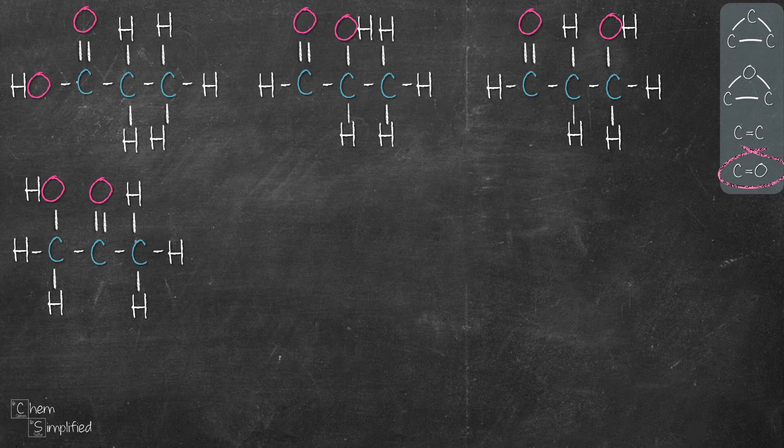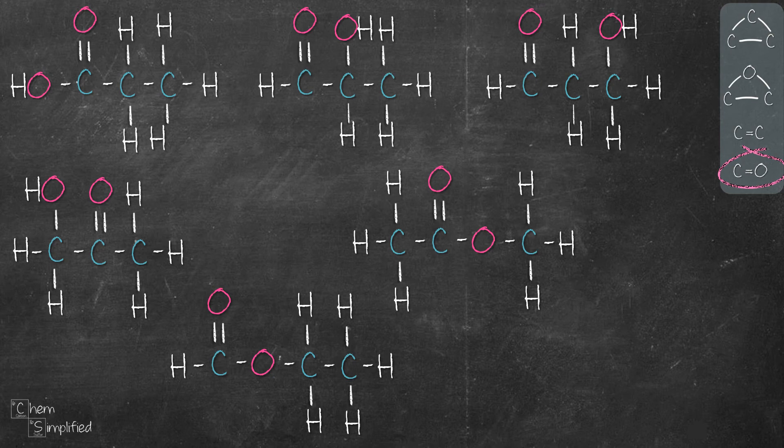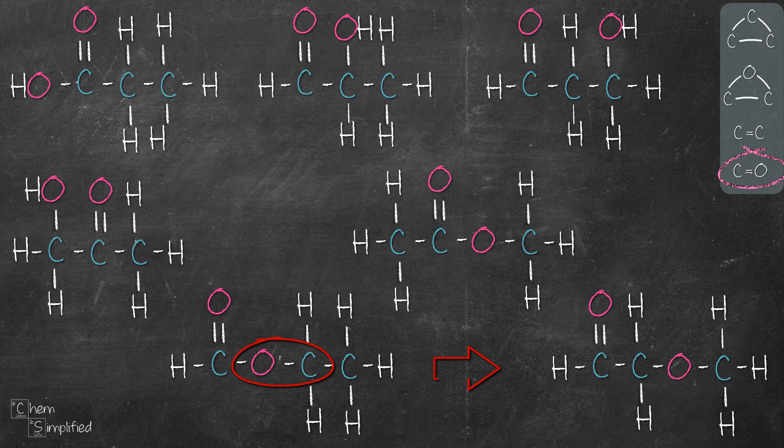Next what we'll do is we'll combine C double bond O and ether group like this. So that will give us the two esters. From this structure if we swap the location of carbon and oxygen, that will give us our final isomer.